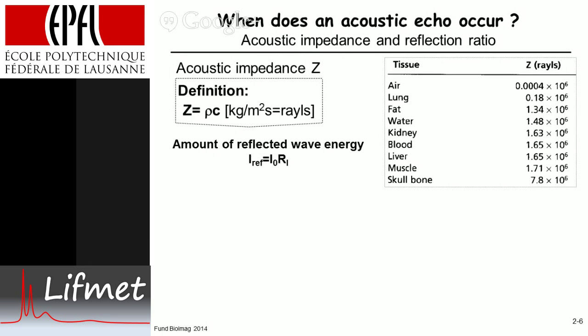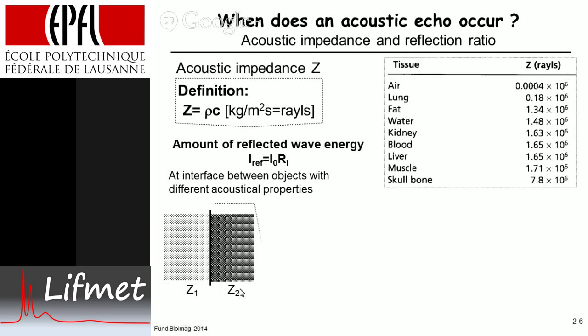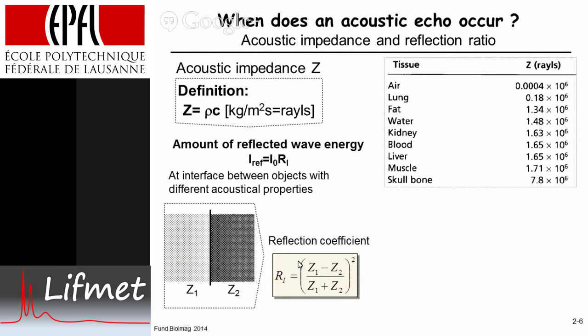From the acoustic impedance, which is a property of the tissue's stiffness if you will, one can deduce the amount of reflected wave energy. This is given by the initial intensity times the reflection coefficient R, which gives you the reflected intensity. What defines the occurrence of an acoustic echo is that one needs two different tissues with different mechanical properties — two different acoustic impedances. Here I've got a simplified object with acoustic impedance Z1 and another tissue with Z2, and the reflection coefficient is given by the difference of the acoustic impedances divided by the sum of the acoustic impedances, squared.